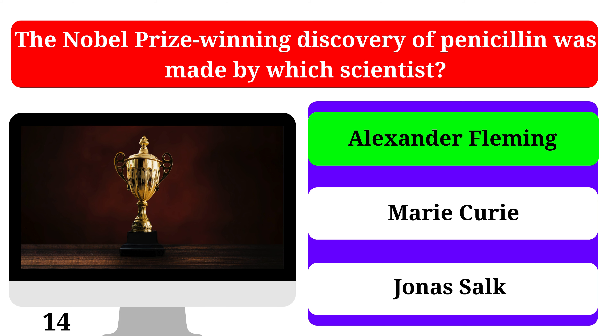In genetics, what is the term for the complete set of genes or genetic material present in a cell? Genome, Chromosome, or Protium. The correct answer is Genome.